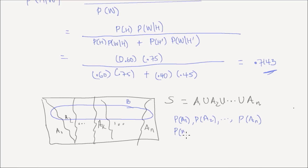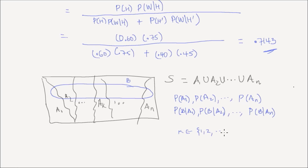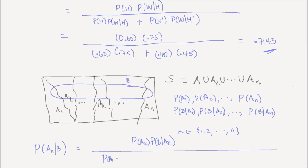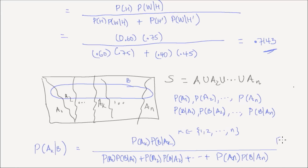You also know the probability that event B could happen given A1, the probability of B given A2, all the way to the probability of B given AN. For any K — where K could be 1, 2, 3, 4, 5, all the way to N — you may be asked to find the posterior probability of AK given event B. That equals P(AK) times P(B|AK), divided by P(A1) times P(B|A1) plus P(A2) times P(B|A2), all the way up to P(AN) times P(B|AN). That is the general form of Bayes' rule.